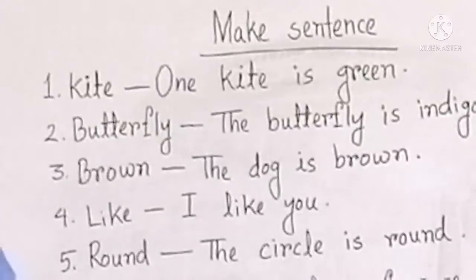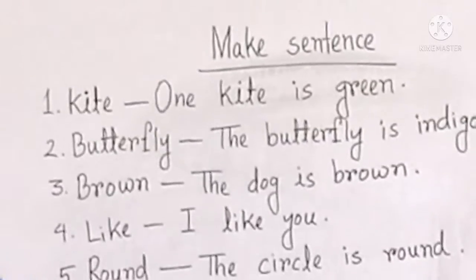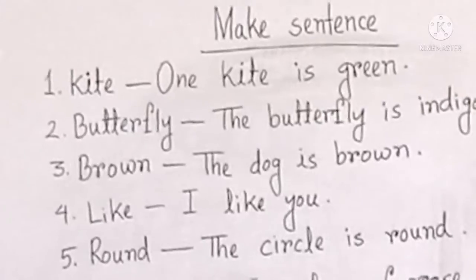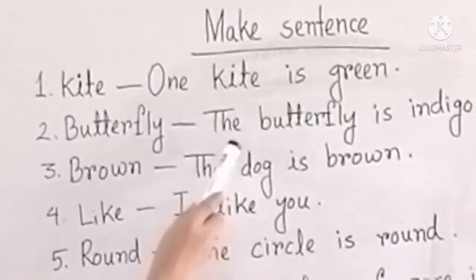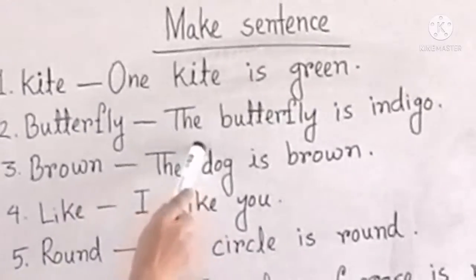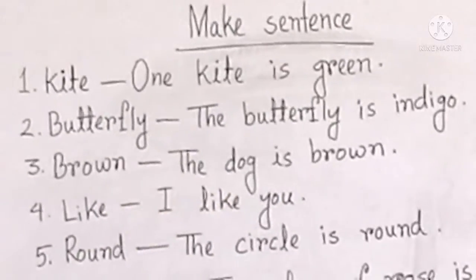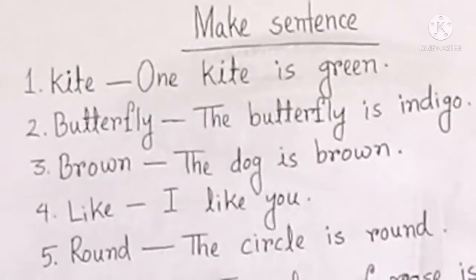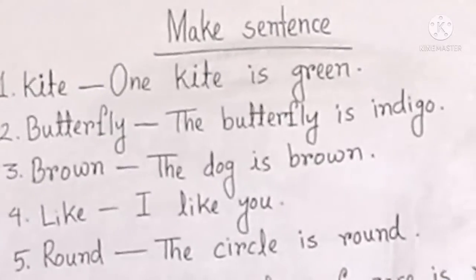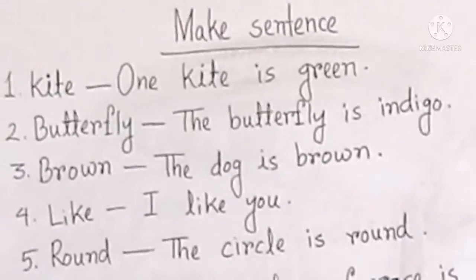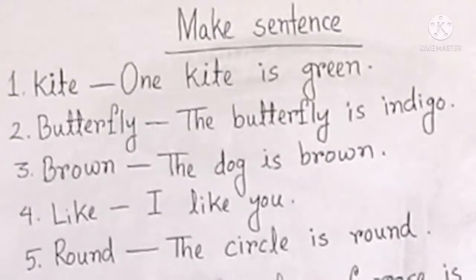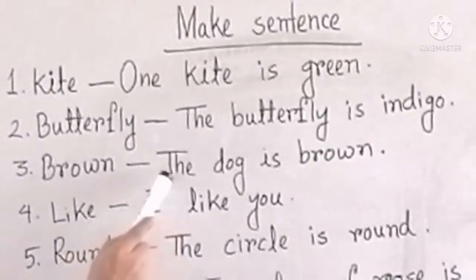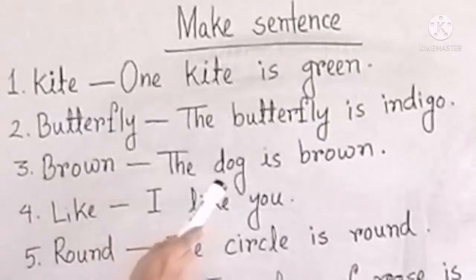The butterfly is indigo, projaputiti. Brown — the dog is brown, kugurti.